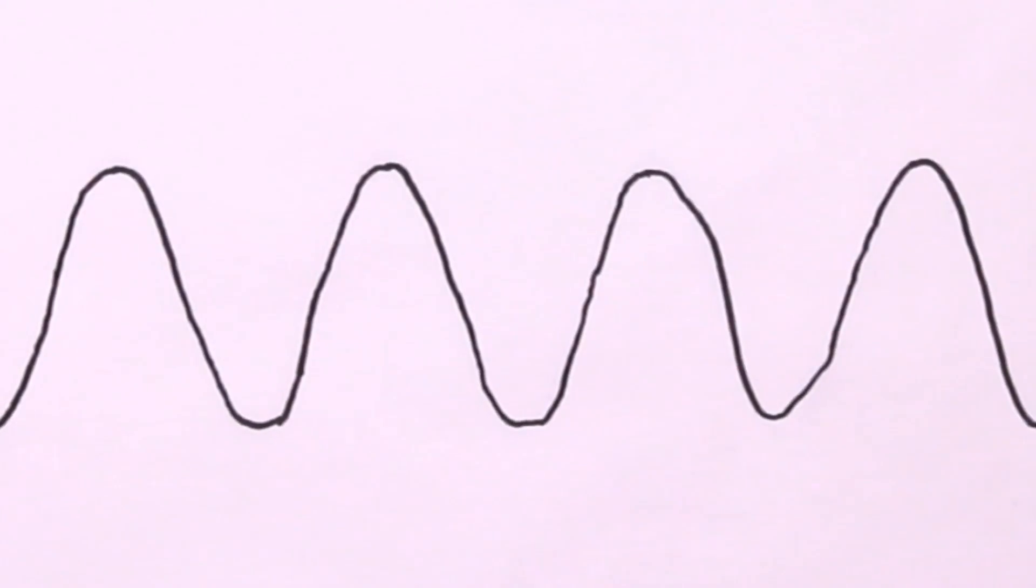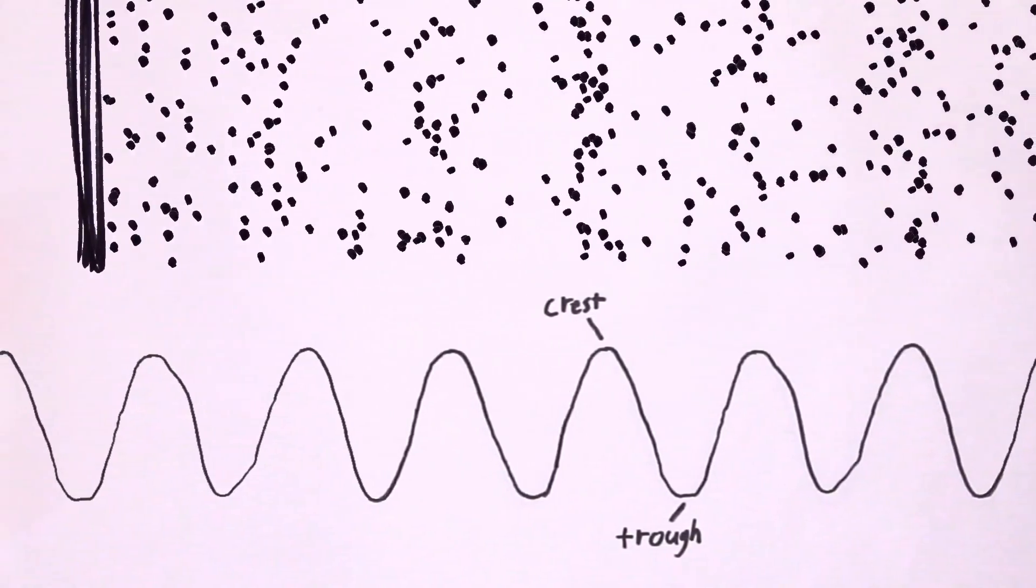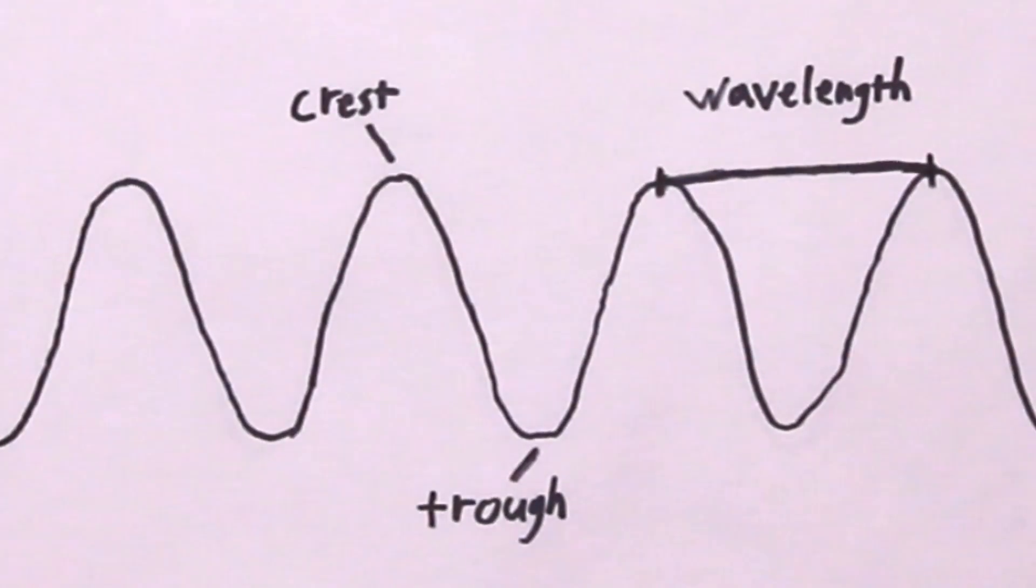Now, sound waves are often illustrated like this because it's easier to draw. Just keep in mind, sound waves don't actually move up and down like that. The crests represent the compressions, and the troughs represent the rarefactions. The distance between two matching points on the wave is called the wavelength.